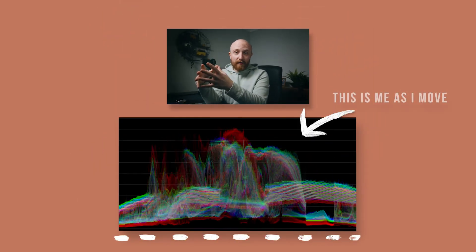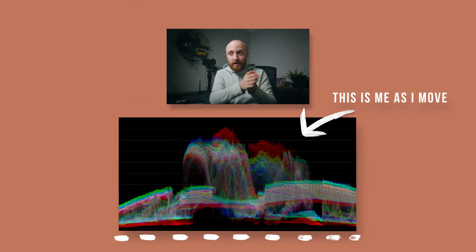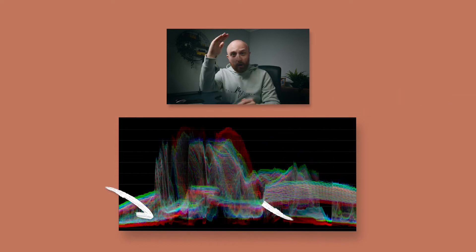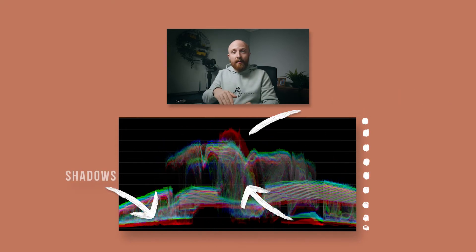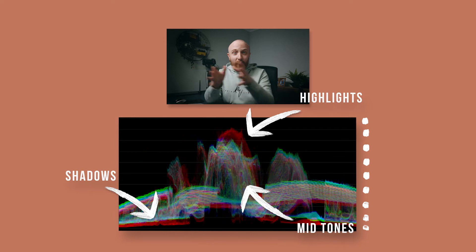A good way to see this in real life is if you overlapped your waveform over your footage — you will notice the waveform moving in line with the footage itself. Looking at it from left to right indicates the position of every color value within that frame of footage, whilst top to bottom represents the brightness or luminance of those colors.